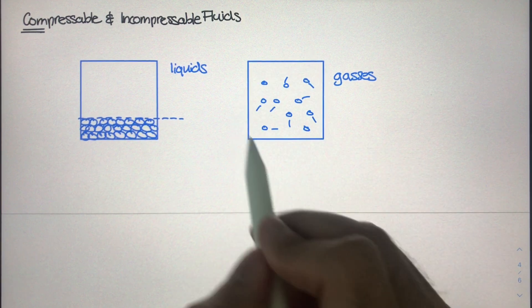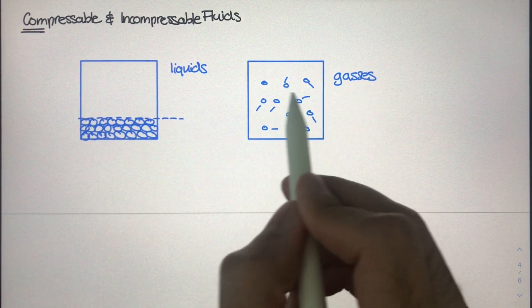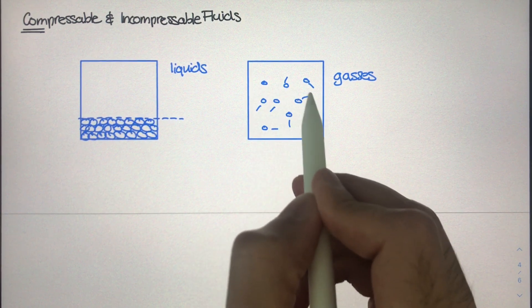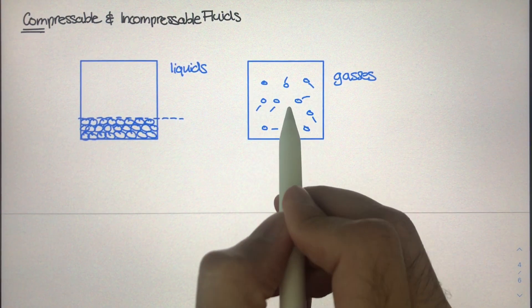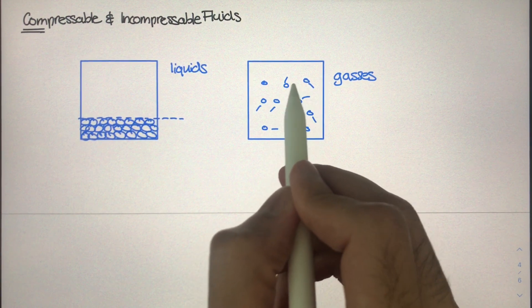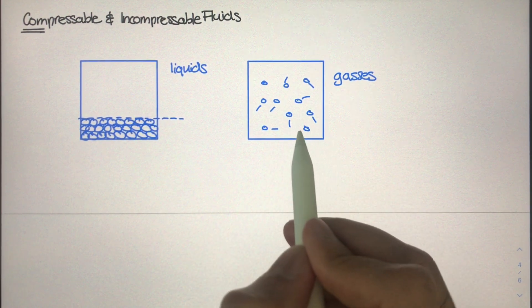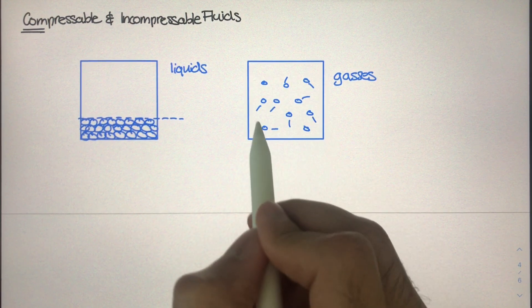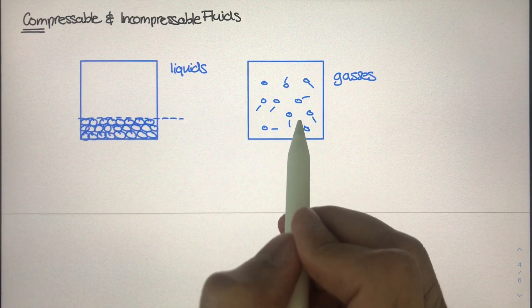So as you compress the container where gases are living, you're going to decrease the space between each molecule. And consequentially, you'll actually increase the number of collisions. The smaller the space is between each one of these particles, the more often the molecules will collide with one another and the surface, the inside surface of their container.